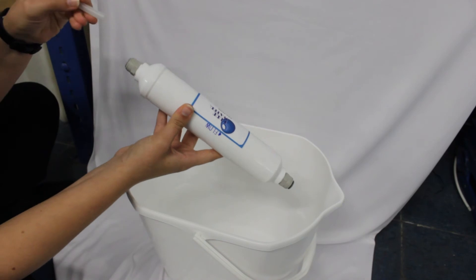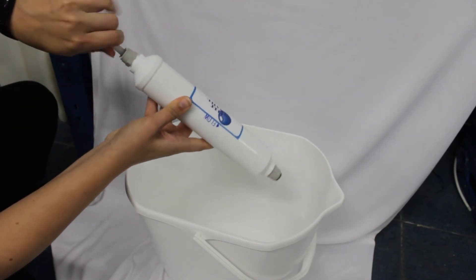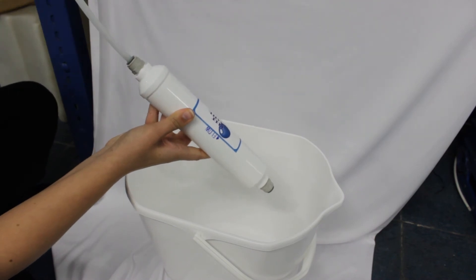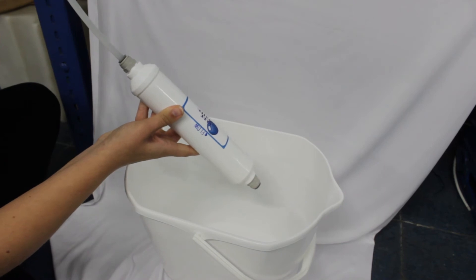Connect the outgoing water line to the inlet side of the new filter. Hold the filter outlet over your bucket. Turn the main power switch to on and allow water to run through the filter until the water runs clear.